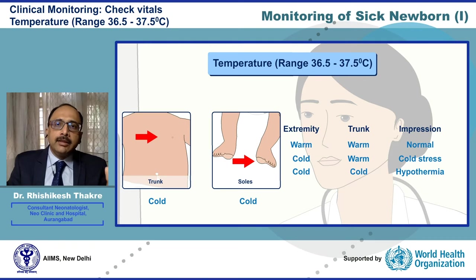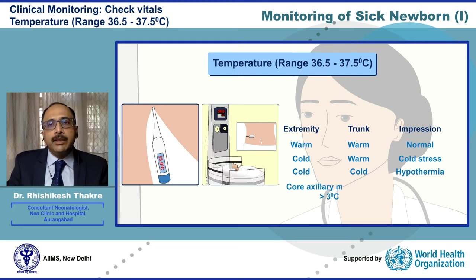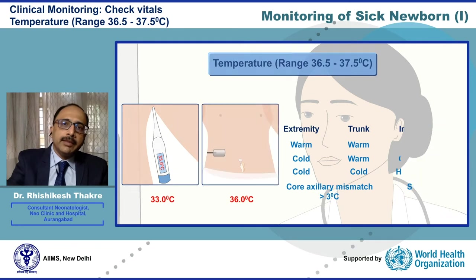Mind you, this all needs to be confirmed by documenting the temperature by means of a thermometer. At any time you document a temperature difference between the core and the periphery of more than 3 degrees Celsius, it has to be taken as secondary to infection unless proved otherwise.